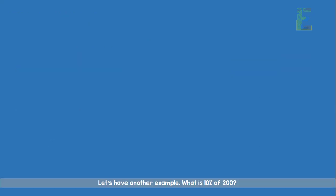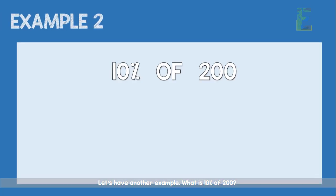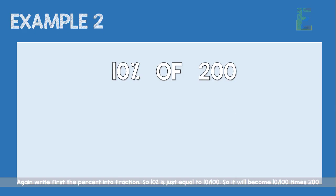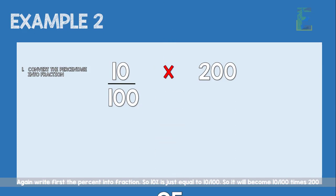Now let's have another example. What is 10% of 200? Again, write the percent as a fraction first. So 10% is just equal to 10 over 100. So it will now become 10 over 100 times 200.